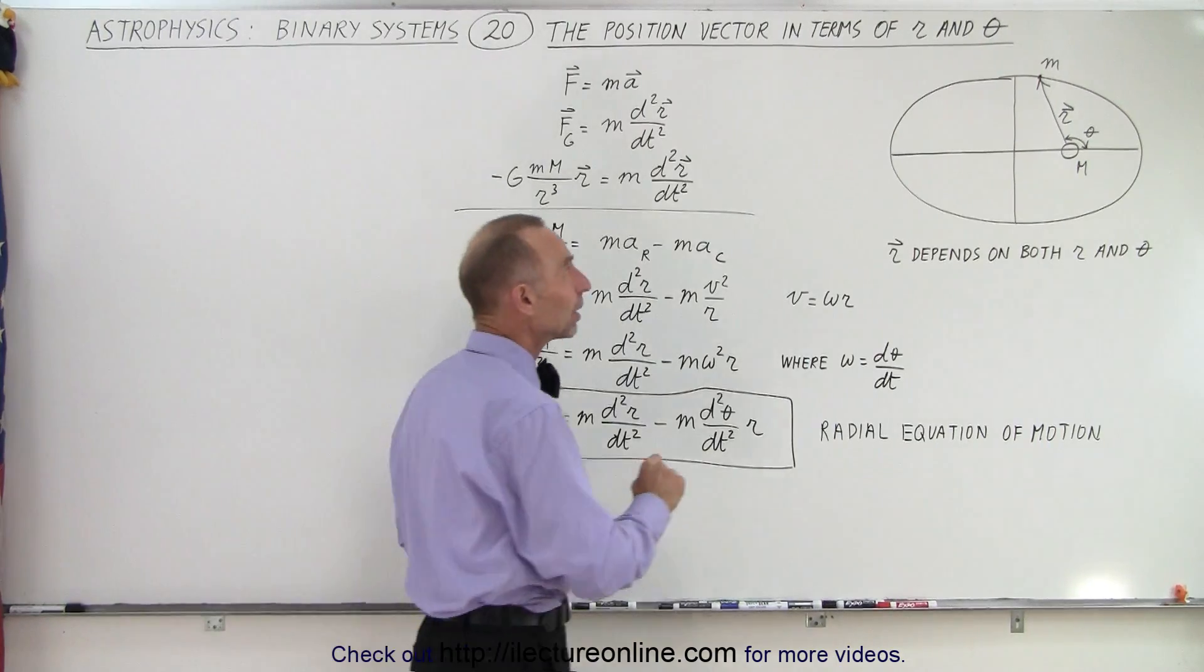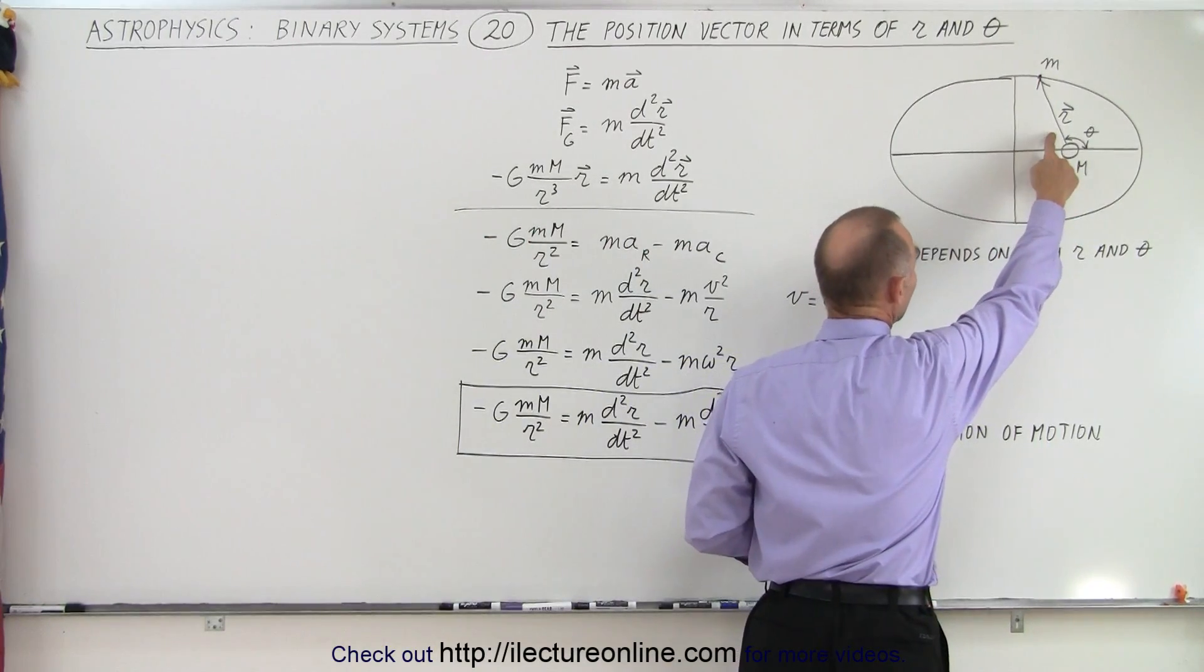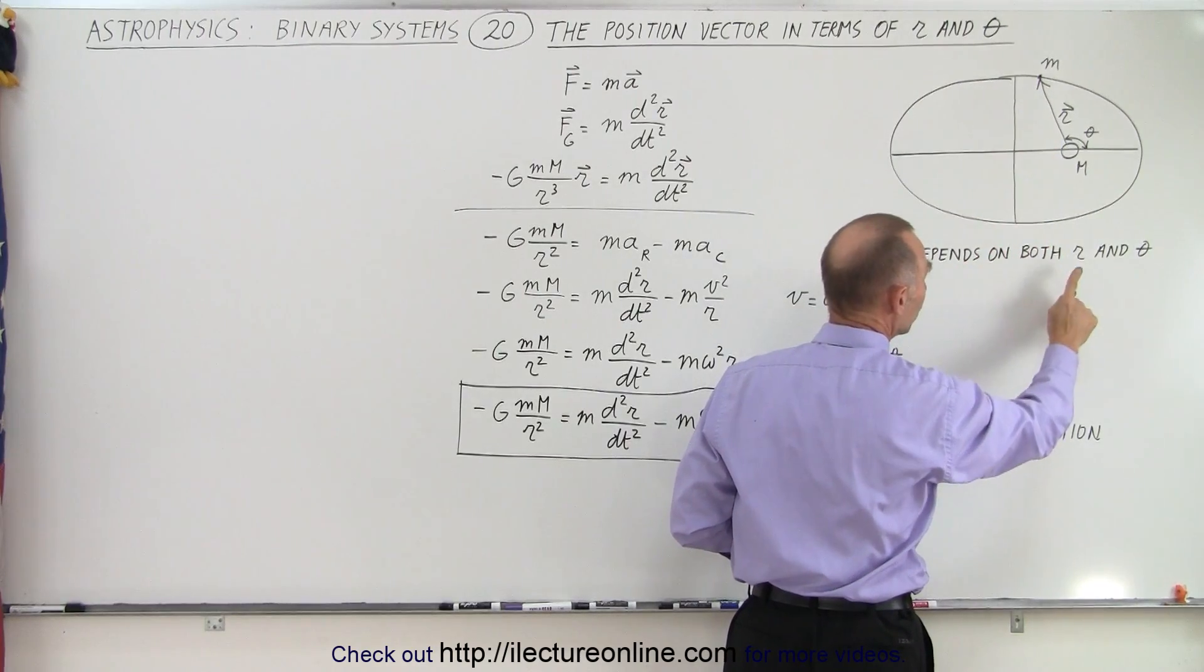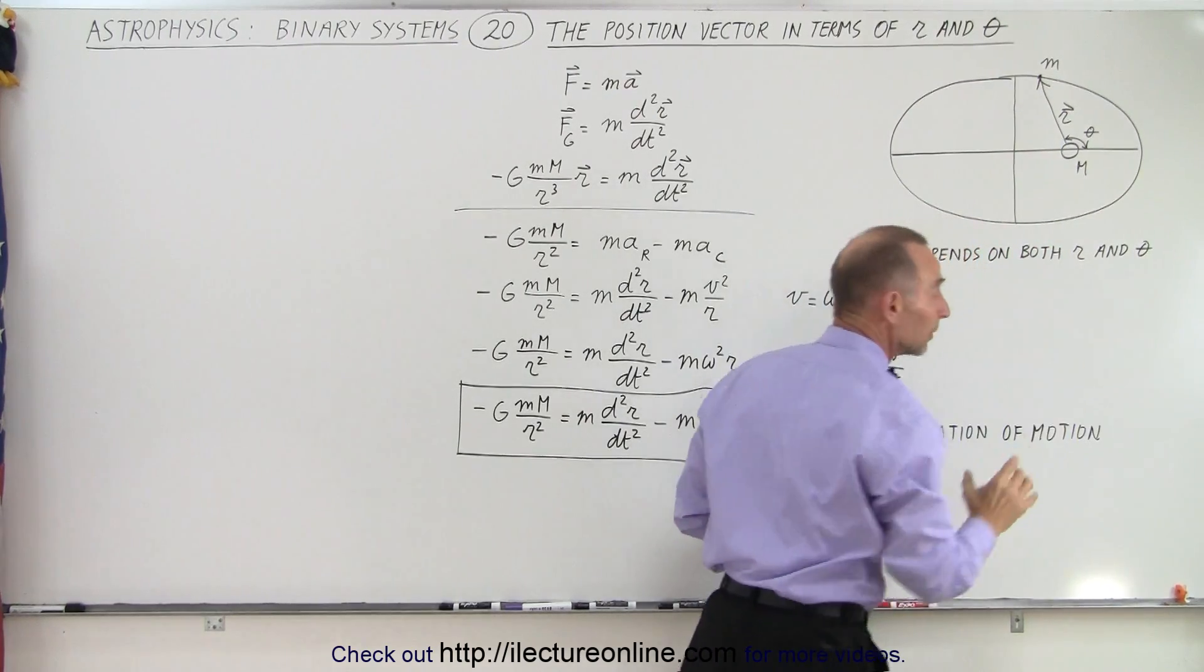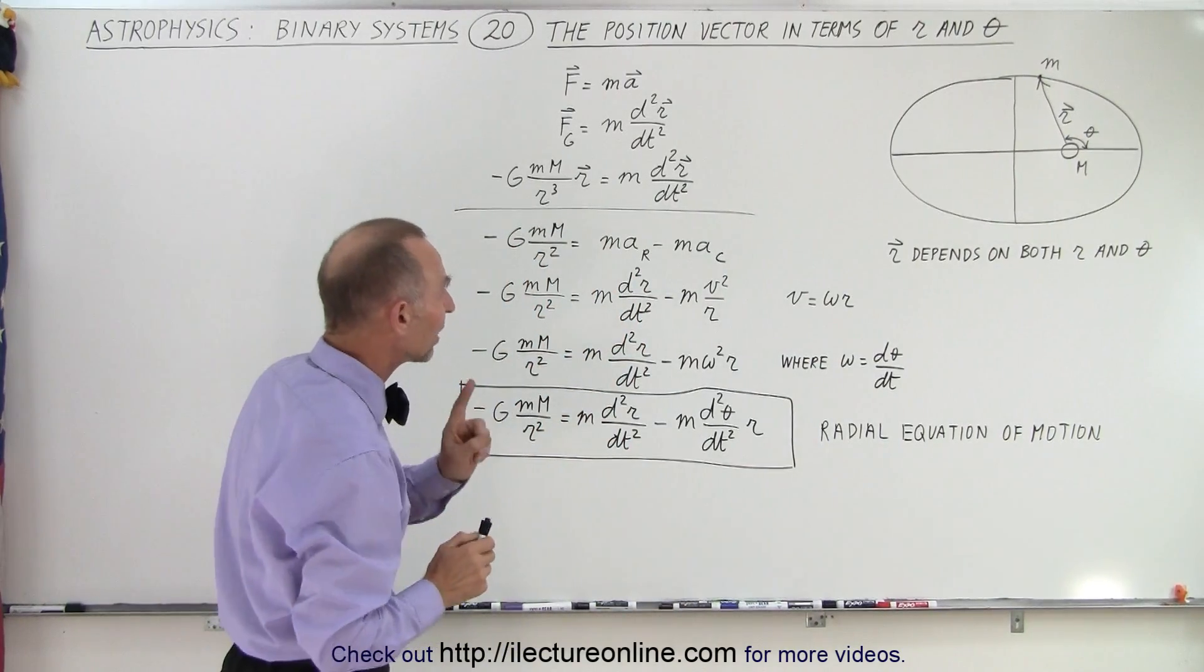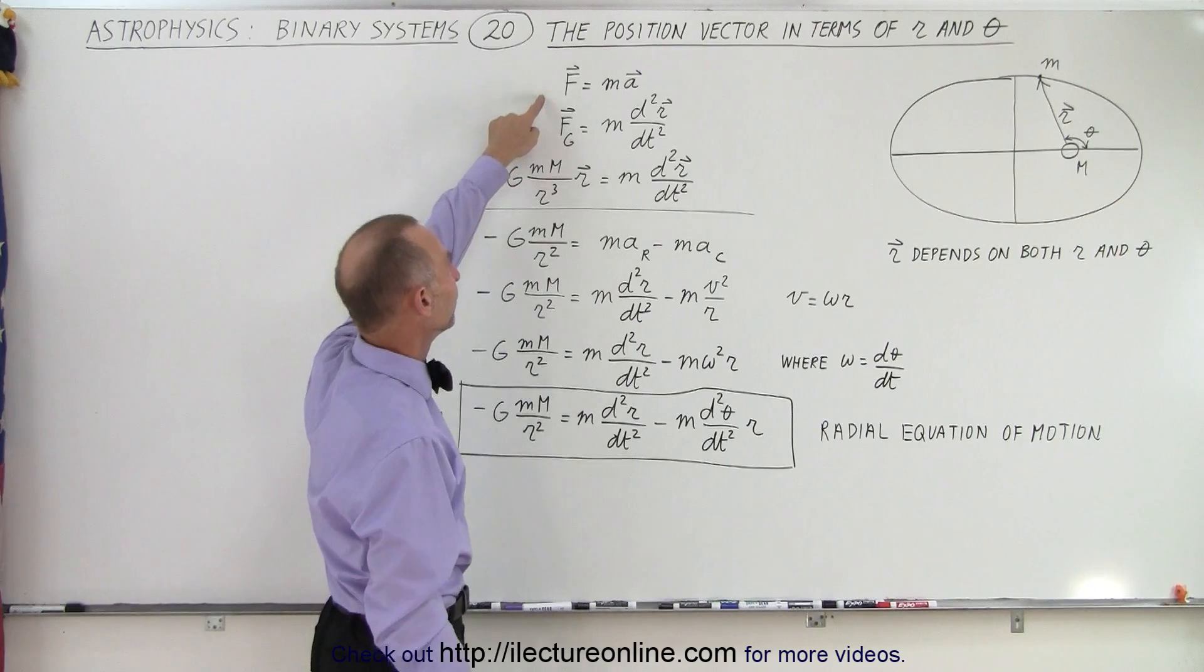First of all, we need to realize that the position vector r between the star and the planet depends upon two variables, both r and theta. There's two variables that are associated with that position vector, and because of that we need to take a look at F equals mA again.